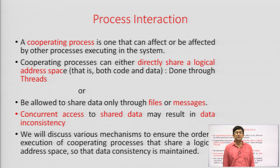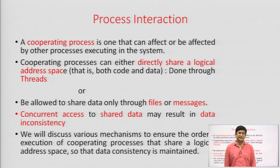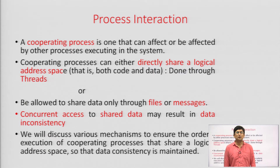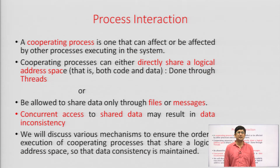We have seen in the previous lectures that there can be two types of processes: the cooperating processes and the competing processes. Competing processes involve a race between processes to access a common resource. Cooperating means a process produces an item and another consumes it, or cooperation is maintained between processes to access shared resources — either through a shared variable or a shared region of memory accessible by different processes. Cooperating processes can directly share a logical address space through threads, or share data only through files and messages using synchronization mechanisms.